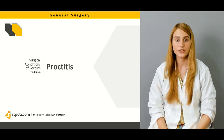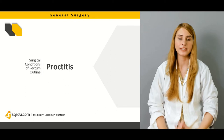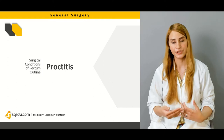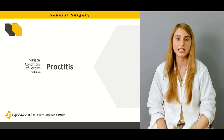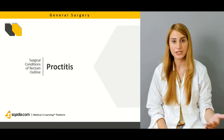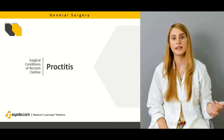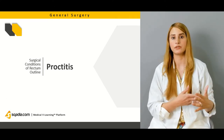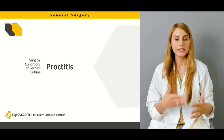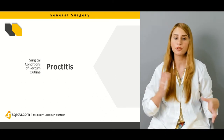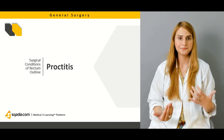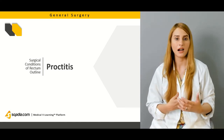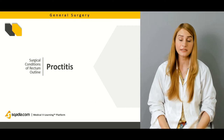We'll then talk about proctitis, which is simply the inflammation of the rectum. The causes are varied — it can be radiation proctitis, ulcerative proctocolitis, proctitis due to Crohn's disease, gonococcal infections, or lymphogranuloma venereum. We'll cover each one, including what histological features provide clues about the specific etiology. There can also be tuberculous proctitis.